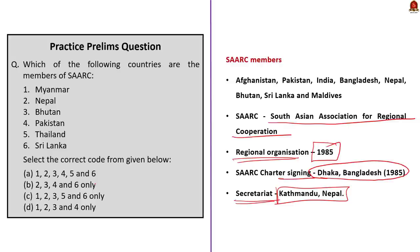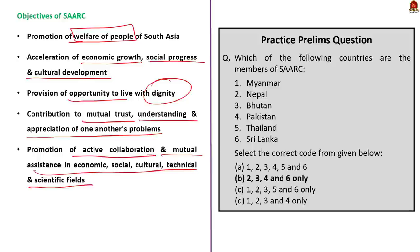The members of SAARC are Afghanistan, Pakistan, India, Bangladesh, Nepal, Bhutan, Sri Lanka, and Maldives. Myanmar and Thailand are not members. Eliminating statements 1 and 5, the answer is option B — 2, 3, 4 and 6 only. Among members, Afghanistan is the newest, added at the 13th annual summit in 2005.